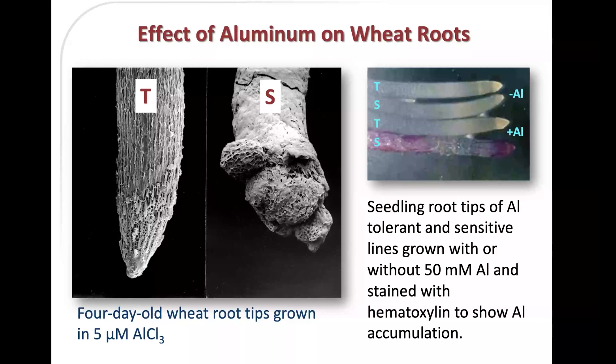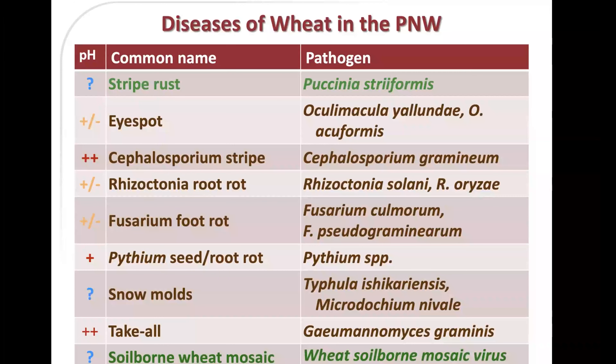Aluminum has direct effects on the root, but some diseases also have an impact on crop productivity as pH changes. Here is a list of common diseases in Eastern Washington and North Idaho. For things like stripe rust, snow molds, and soil-borne wheat mosaic, we really don't have any information on pH effects. For eye spot, rhizoctonia root rot, and fusarium foot rot, we have a plus and minus — some data indicating an effect of pH.